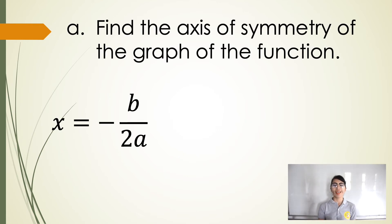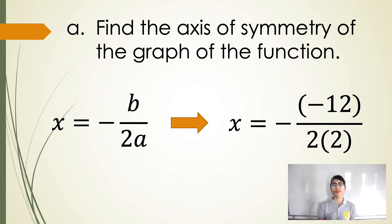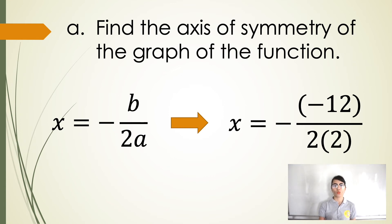For letter a, find the axis of symmetry of the graph of the function. Given the formula for finding the axis of symmetry, which is x is equal to negative b over 2a, let's substitute the given values to the formula. So we have x is equal to negative 12 over 2 times 2. For the axis of symmetry, we have x is equal to 3.